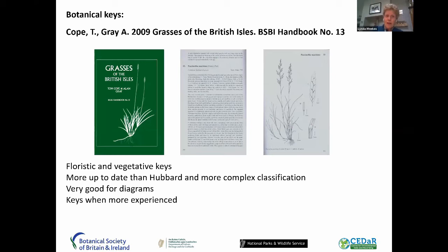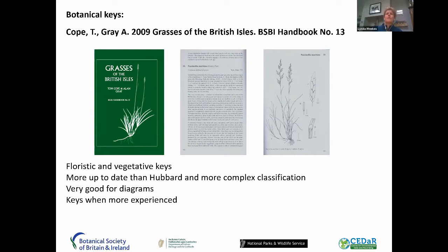The up-to-date Hubbard version, if you like, is Copengray's 'Grasses of the British Isles' from the BSBI. Its aim was to bridge the gap between the outdated Hubbard and incorporate today's knowledge about grasses and classification. It's more complex in its classification, taking in modern taxonomy, so it's really for more advanced users rather than complete beginners. But the diagrams and descriptions are excellent, and it's a great book to have as you become more experienced.